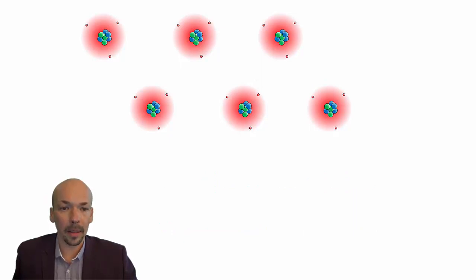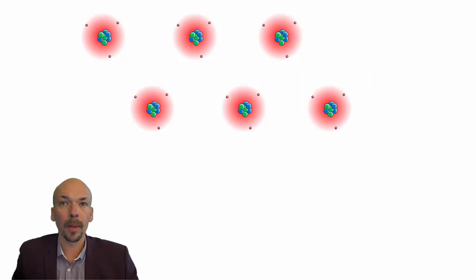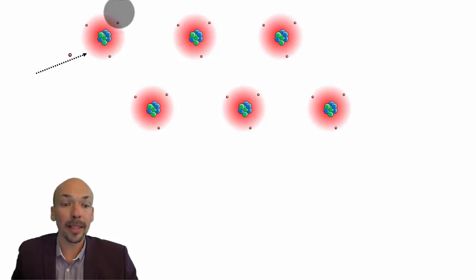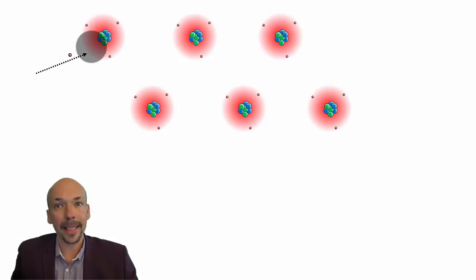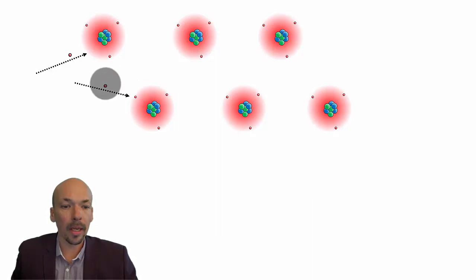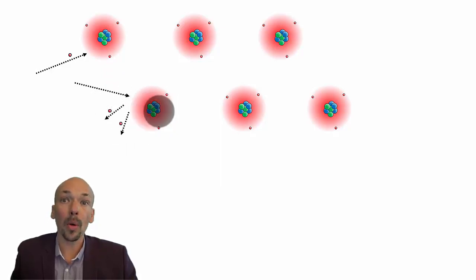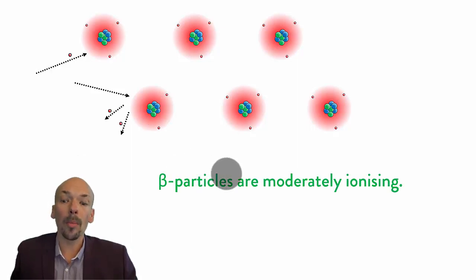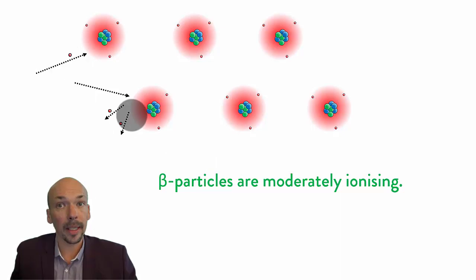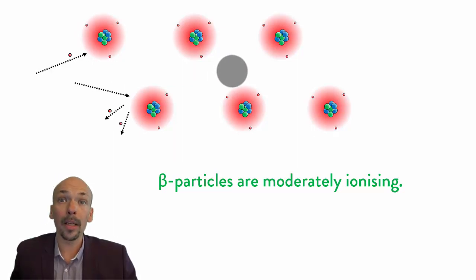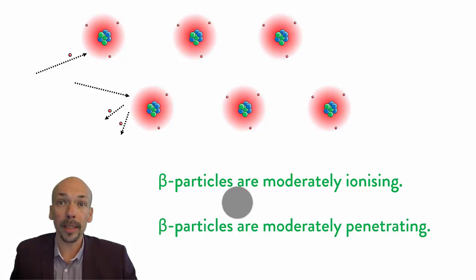Beta particles are negatively charged. When they go through a material, they will not attract other electrons so they cannot steal away electrons from atoms. But there are two different things they can do: they can add themselves to an atom, giving it one electron too many and ionizing it. Or they can knock off one of the existing electrons — if this beta particle hits an electron, they both fly away and the atom will have one electron too few, so it will also be ionized. But the chances are a lot less than with an alpha particle. Therefore, beta particles are moderately ionizing — many will just go right through without ionizing anything. Because they are a lot smaller and lighter, they are moderately penetrating, more so than alpha particles.